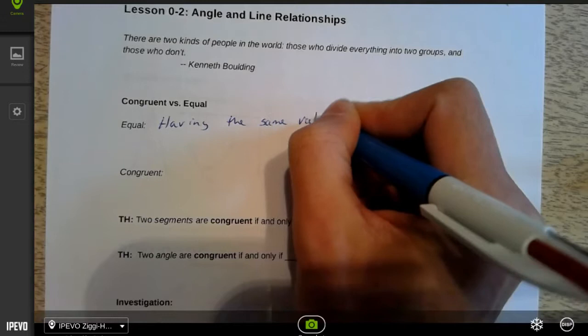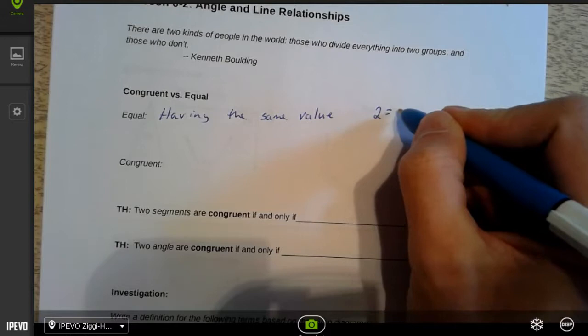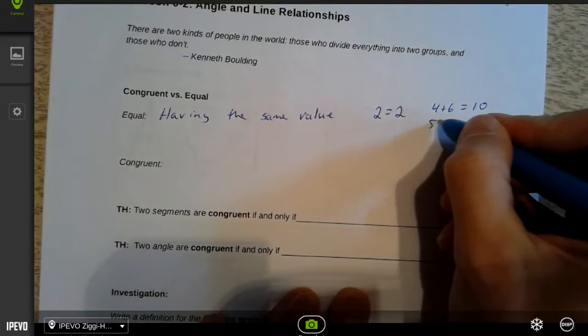Equal means they are the same thing. The number 2 is the same as the number 2. Four plus six is the same thing as ten. In fact, it's just another way to write ten. Five plus five is also another way to write ten.